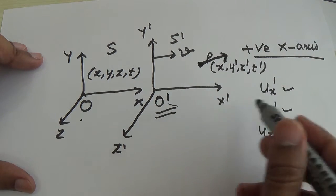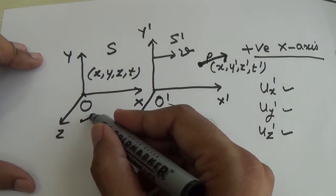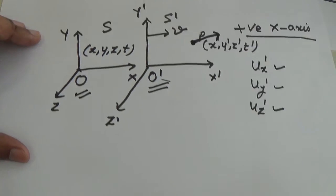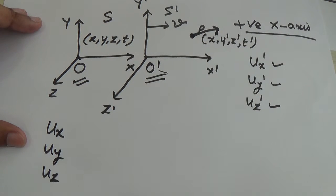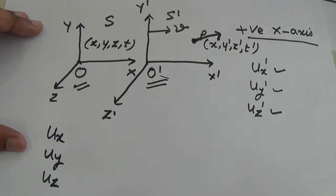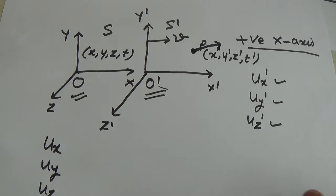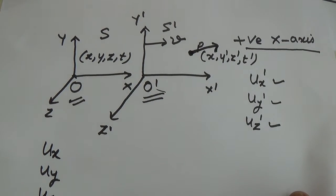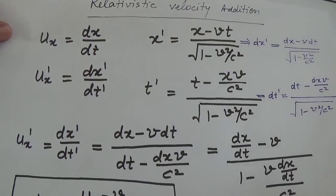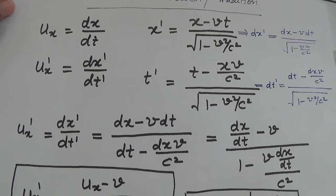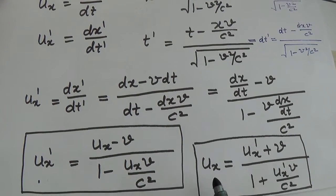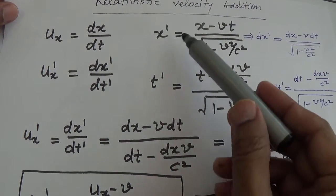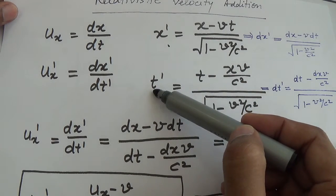If I have to find out the velocity component according to the O observer, they will be ux, uy, and uz. One can find out these components with the help of the Lorentz transformation. As seen in the earlier slide, I found ux prime and ux using the Lorentz transformation of x prime and t prime. One can write x is equal to x prime plus v·t prime upon the square root factor, and t is equal to t prime plus x prime·v upon c squared — this is the inverse Lorentz transformation.